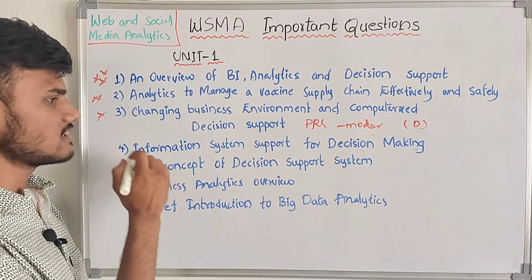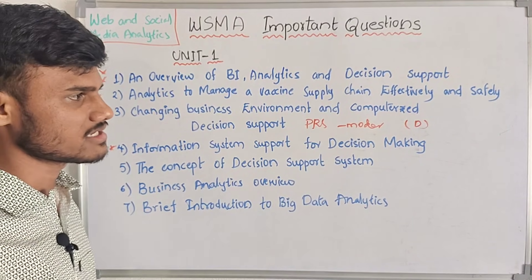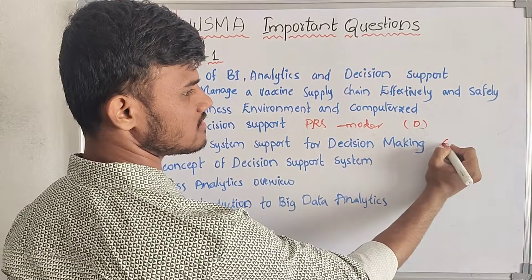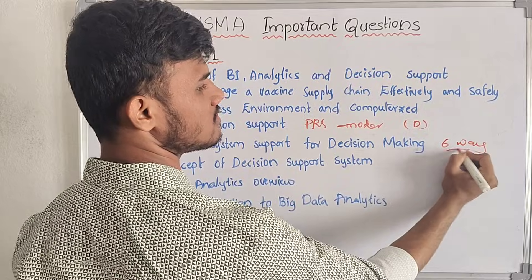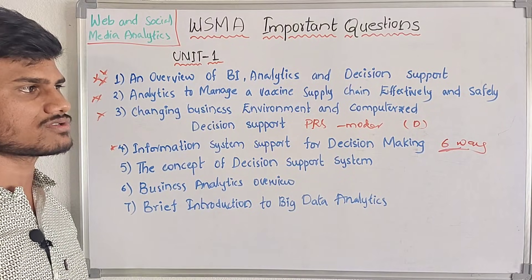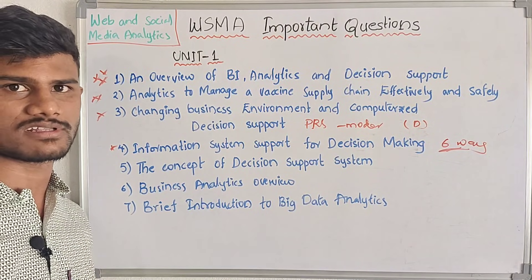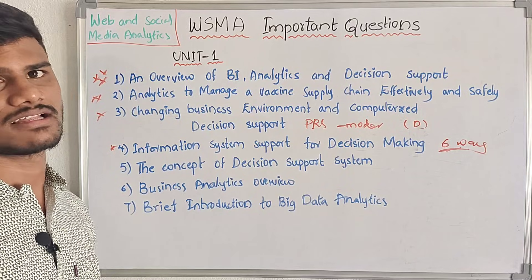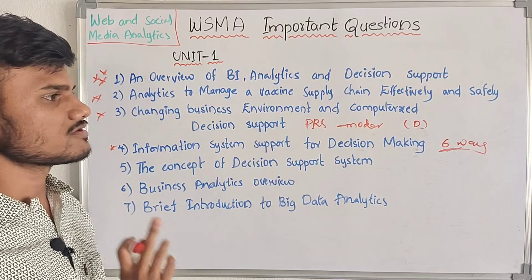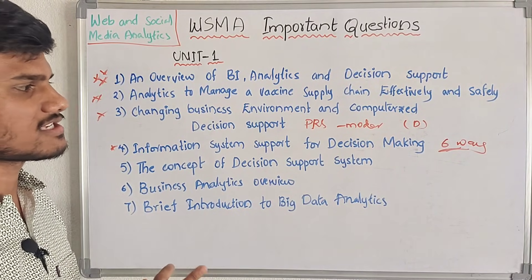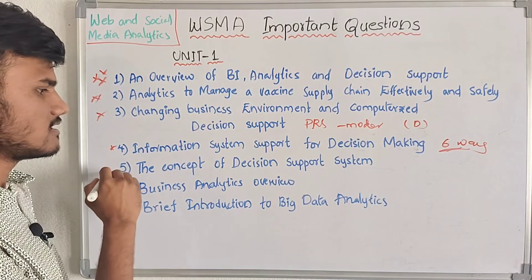Next, information system, support for decision making. So, there are 6 ways of decision making. If you have notes, choose notes on the Telegram channel. So, choose these 6 ways of decision making.